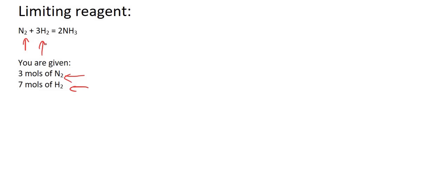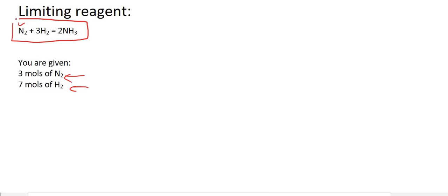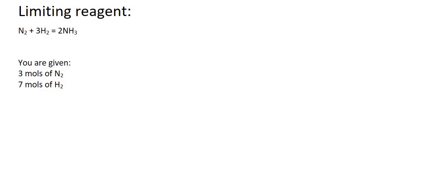I really hope you understand what I've just said — that is very important. So they've given us nitrogen and they've given us hydrogen. Now, if we look at the recipe — remember, just like when we were baking cakes, here's your recipe. It tells you that for every one nitrogen, you need three hydrogens.